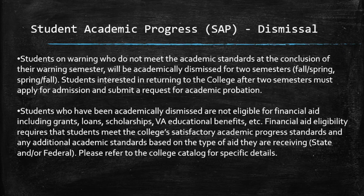Students on warning who do not meet academic standards at the conclusion of their warning semester will be academically dismissed for two semesters — either fall and spring, or spring and fall. Students interested in returning must apply for admission and submit a request for academic probation. Students who have been academically dismissed are not eligible for financial aid, including grants, loans, scholarships, VA educational benefits, etc. Financial aid eligibility requires that students meet the college's satisfactory academic progress standards and any additional academic standards based on the type of aid they are receiving, state and/or federal.